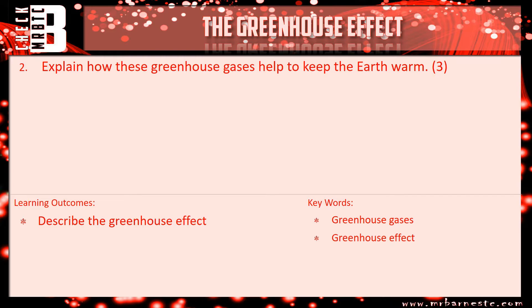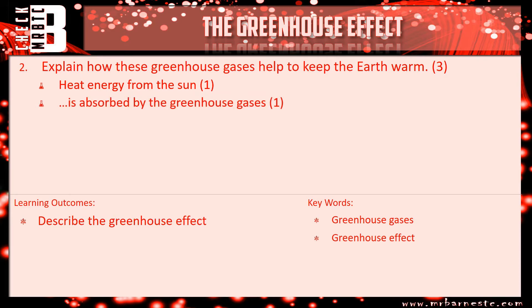Question two: explain how these greenhouse gases help to keep the earth warm. Nice and simply — heat energy from the sun is absorbed by the greenhouse gases. It traps heat in the atmosphere which keeps the earth warm. And that's all you need to put to get three marks.